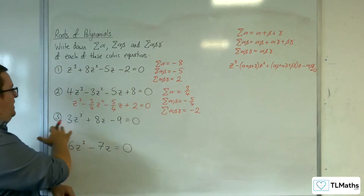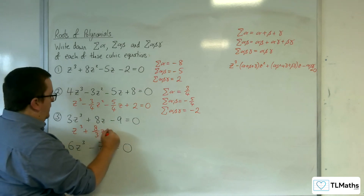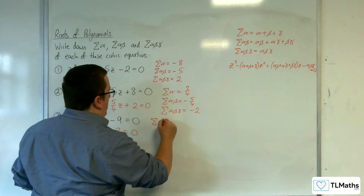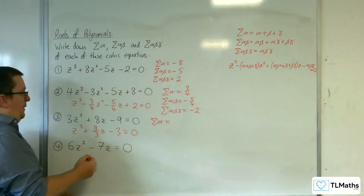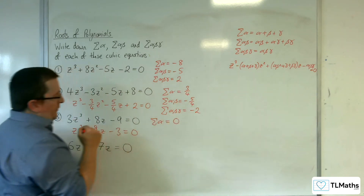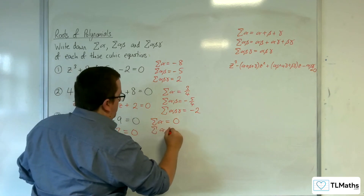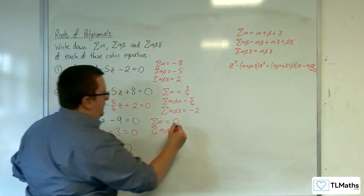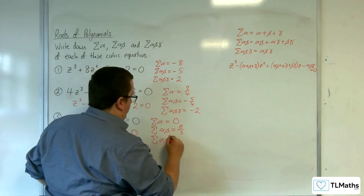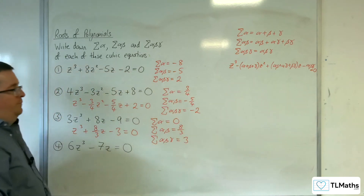For the third one, we're going to need to divide through by 3 first. So: z cubed plus eight thirds z, take away 3, equals 0. The sum of the roots — the coefficient of z squared is 0, so they add up to 0. The sum of the product pairs is going to be eight thirds. And the product of the three roots, alpha beta gamma, is going to be equal to 3.